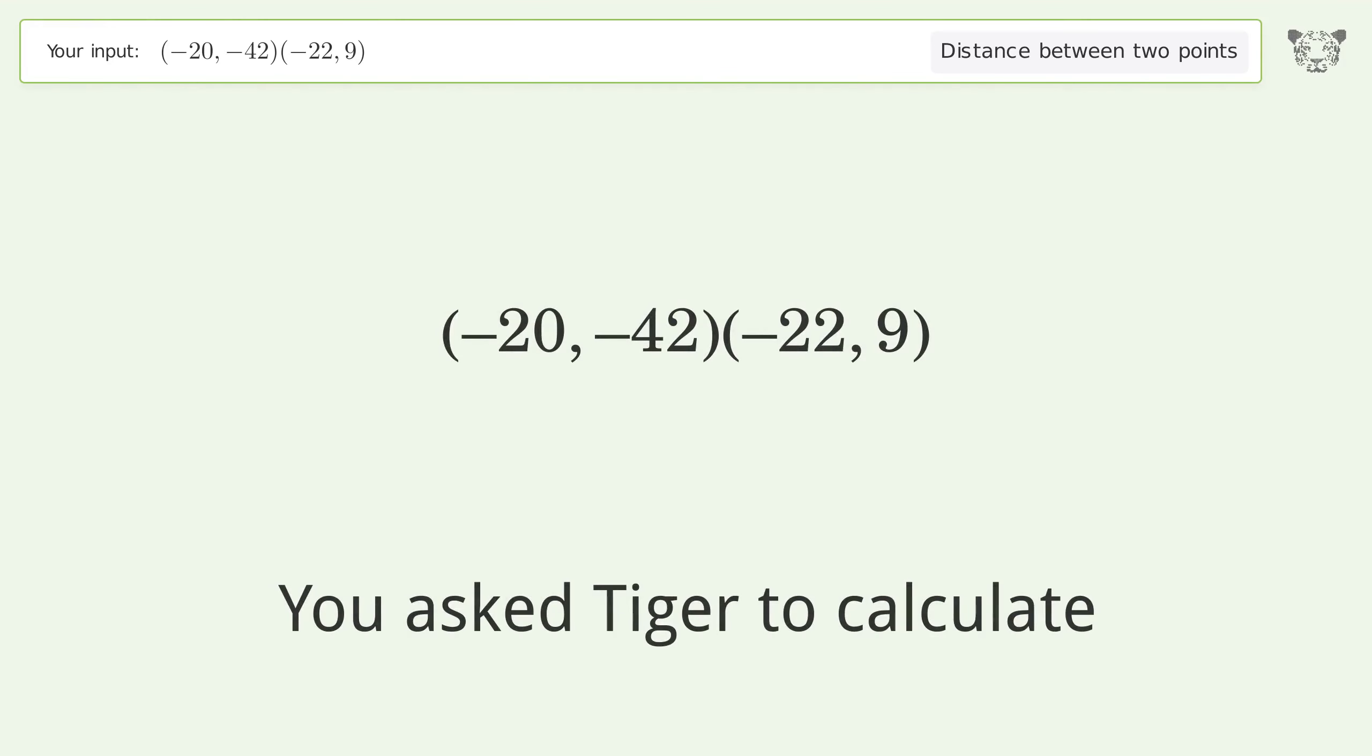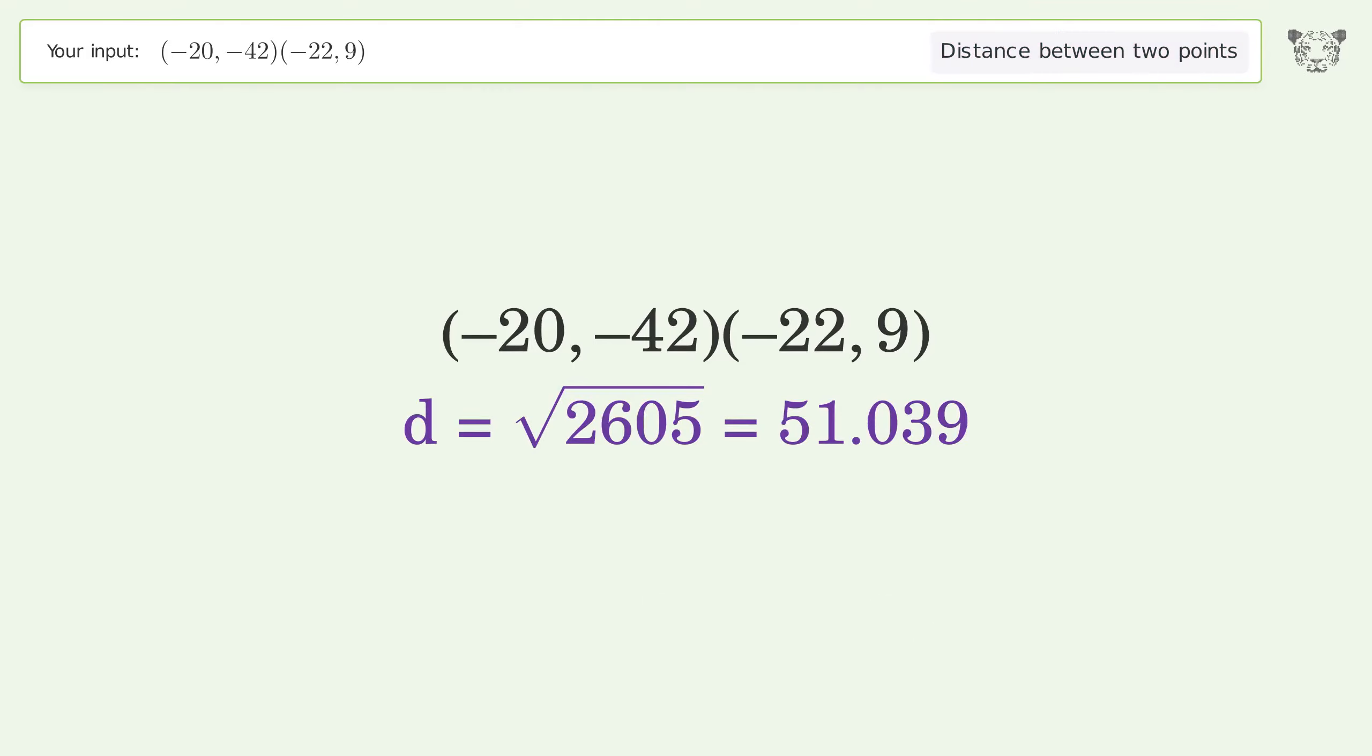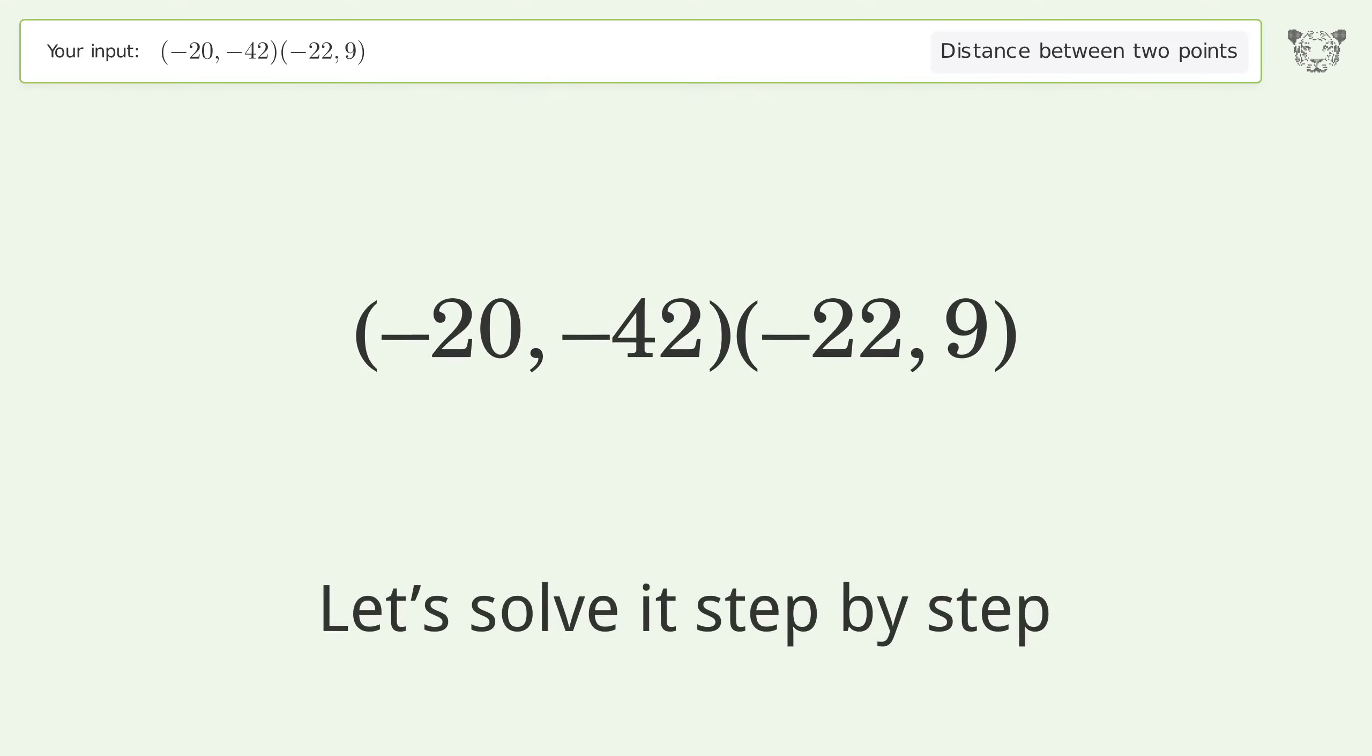You asked Tiger to calculate the distance between two points. The distance between the two points is the square root of 2605 or 51.039. Let's solve it step by step.